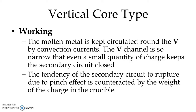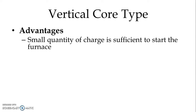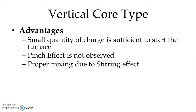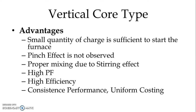The molten metal is kept circulated around the V crucible by convection currents. The V channel is so narrow that even a small quantity of charge keeps the secondary circuit closed. The tendency of the secondary circuit to rupture due to pinch effect is counteracted by the weight of the charge in the crucible, so the pinch effect can be avoided. Advantages over Horizontal Core type include: small quantity of charge is sufficient to start the furnace due to the V shape, pinch effect is not observed, proper mixing due to stirring effect, high power factor, and high efficiency.